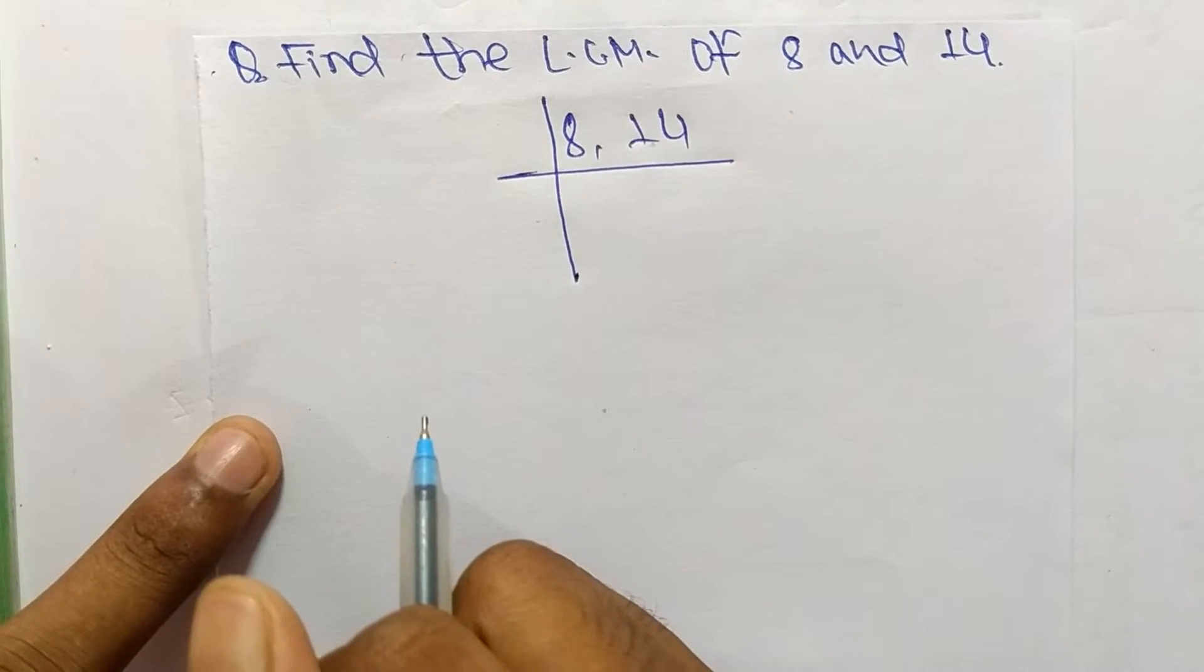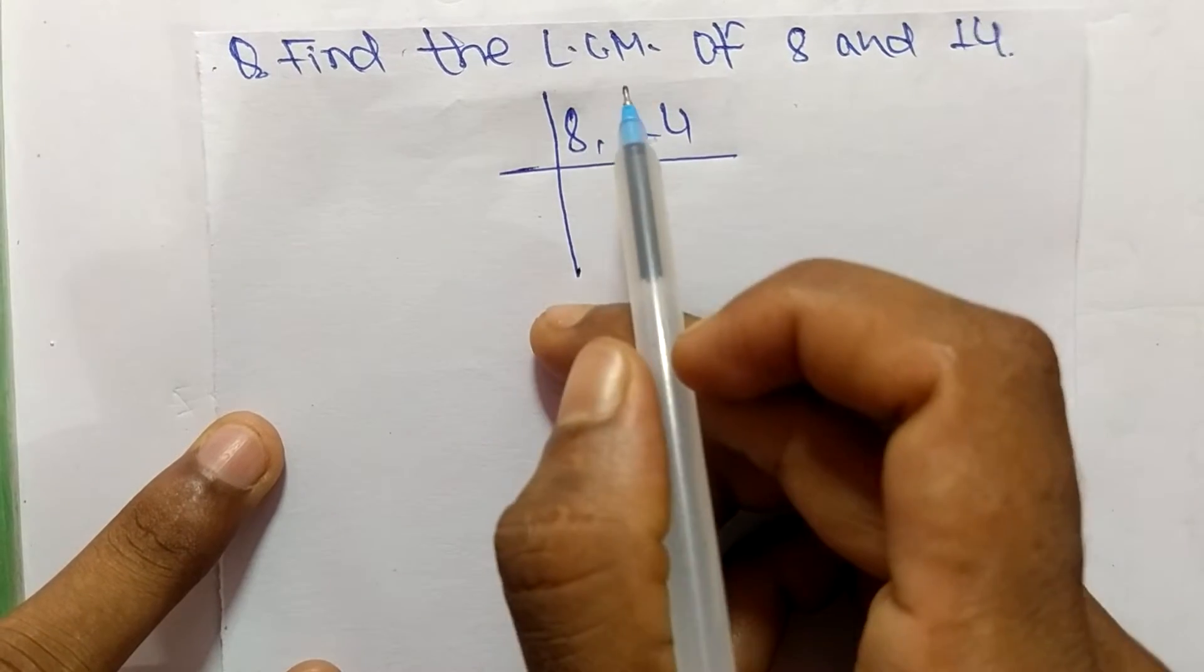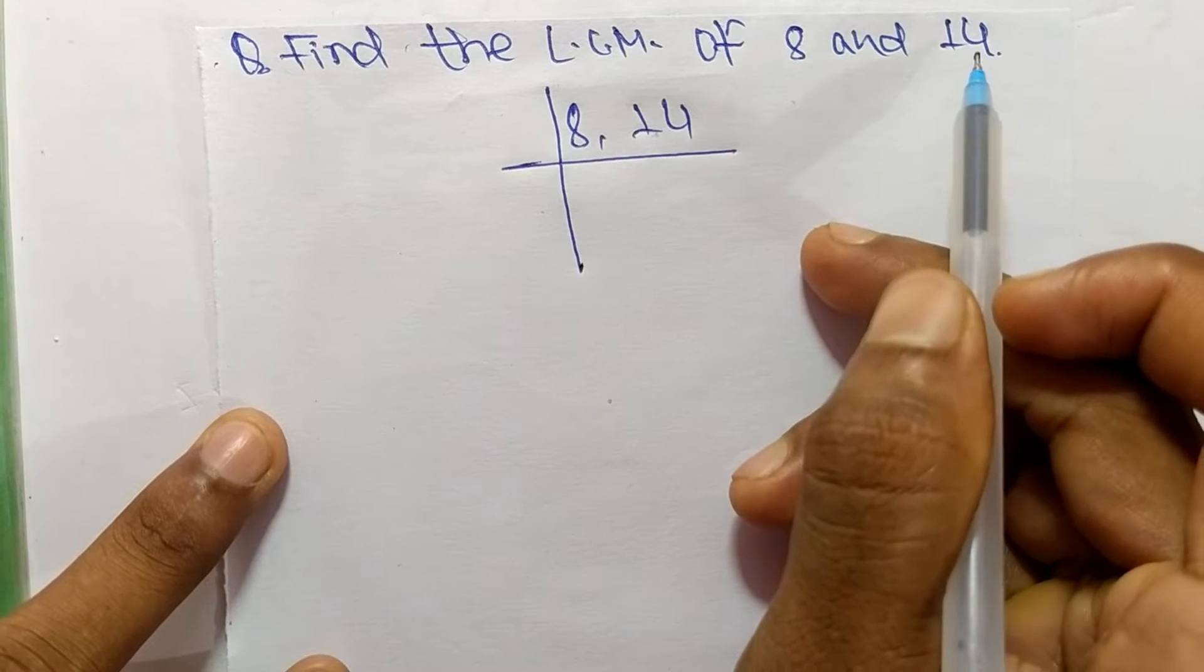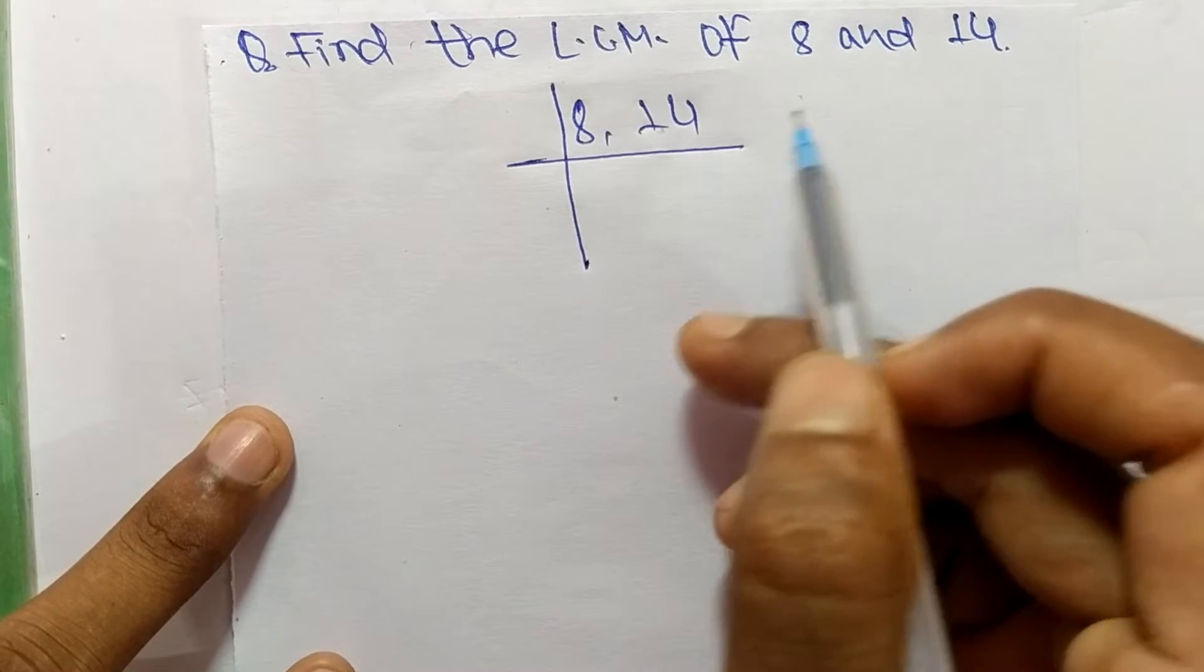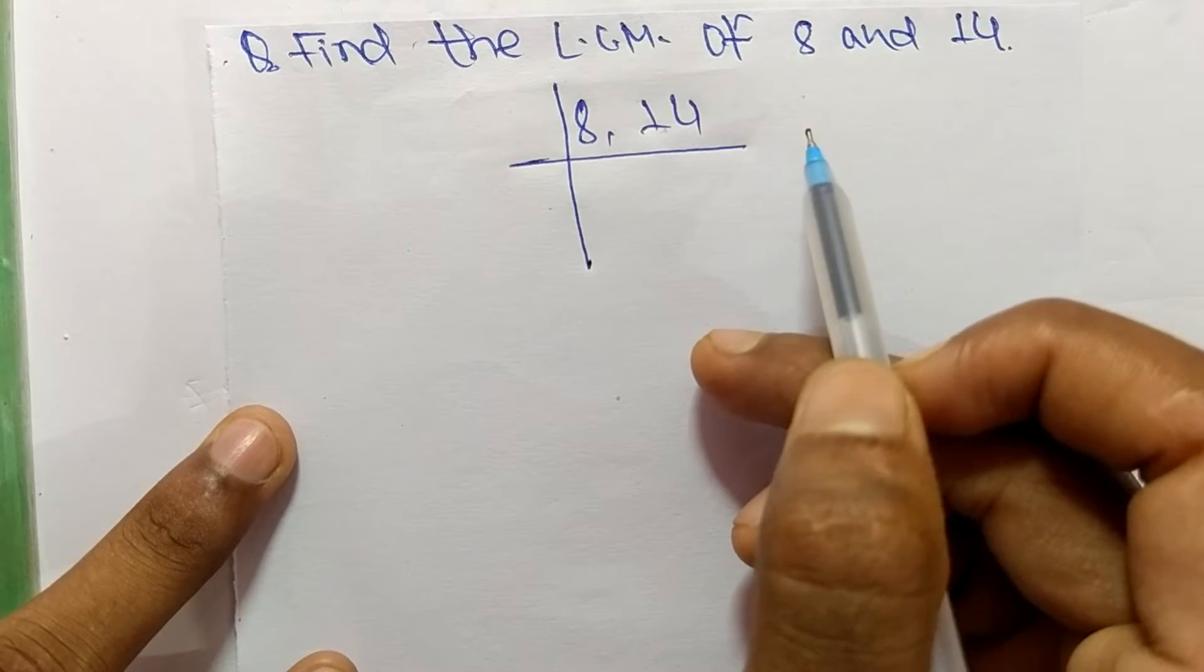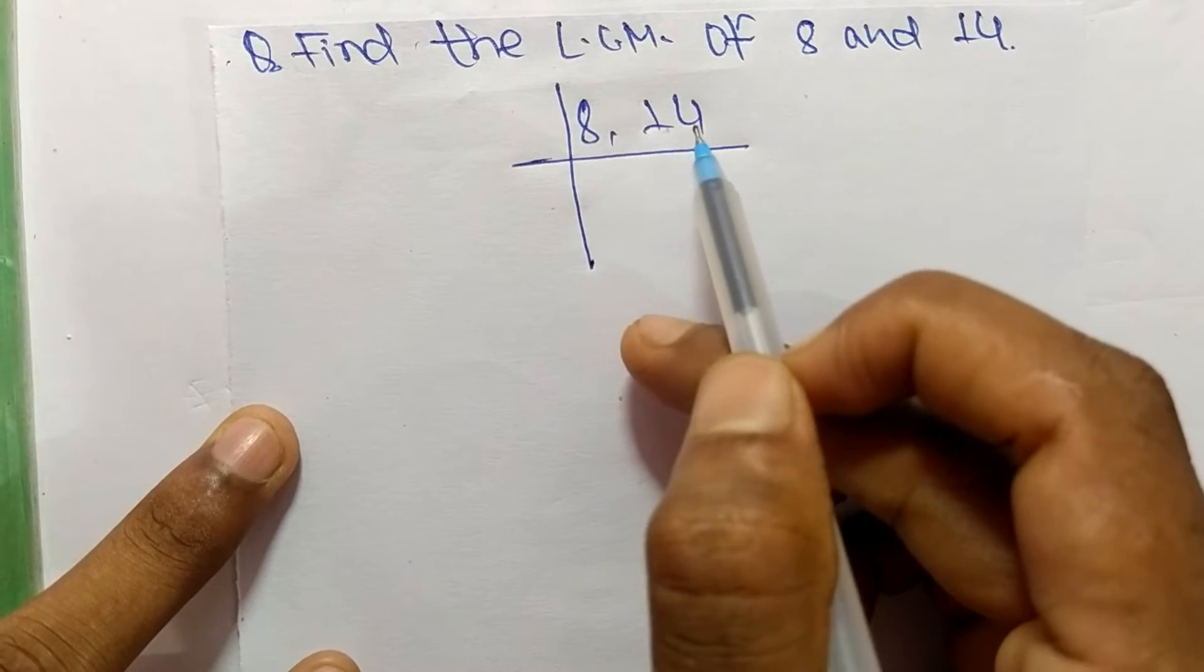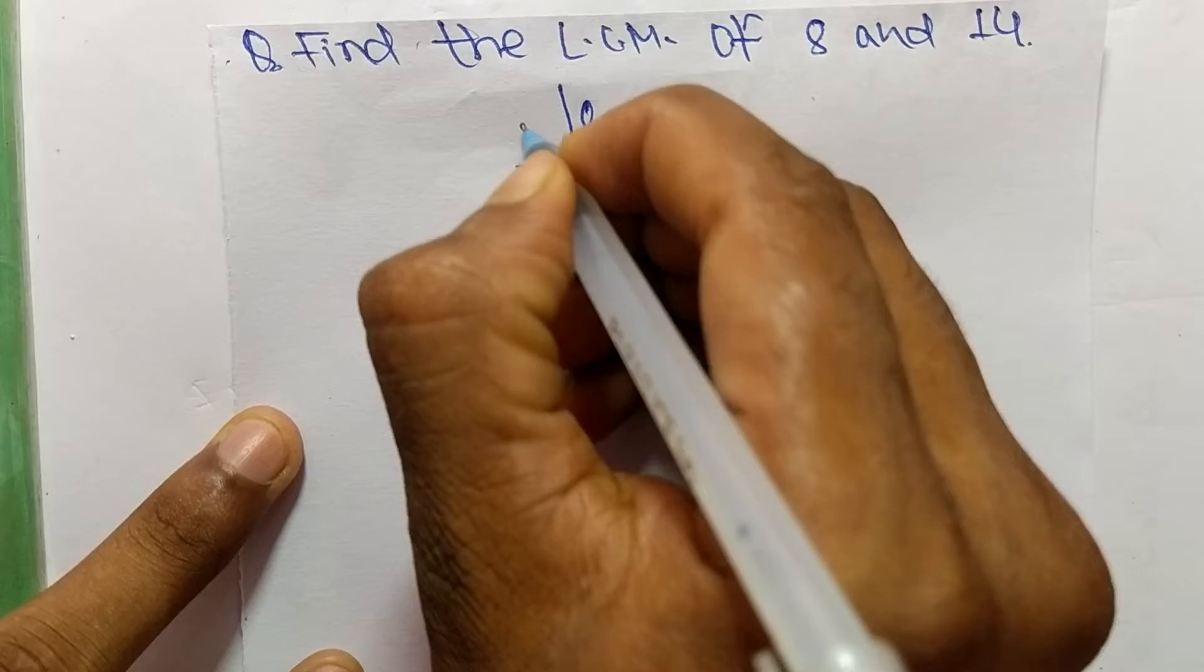So today in this video we shall learn to find the LCM of 8 and 14. So to find LCM, first you have to choose the lowest number which can exactly divide 8 and 14. So the number is 2.